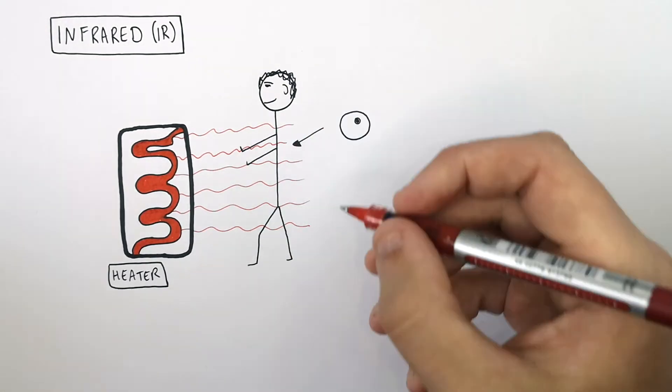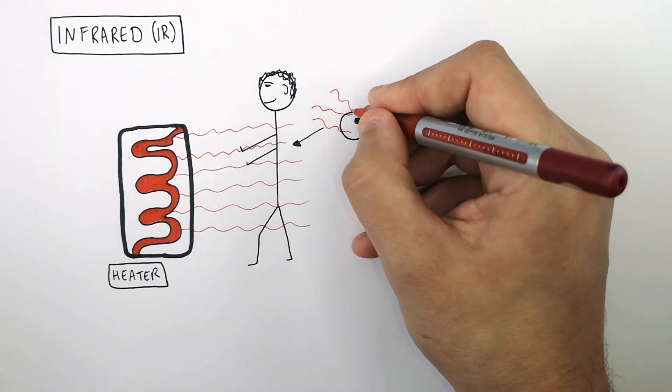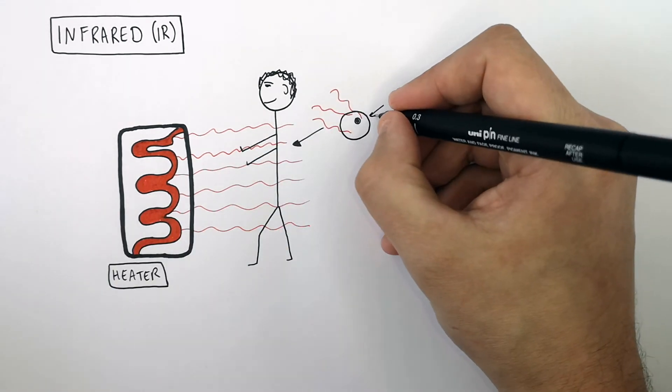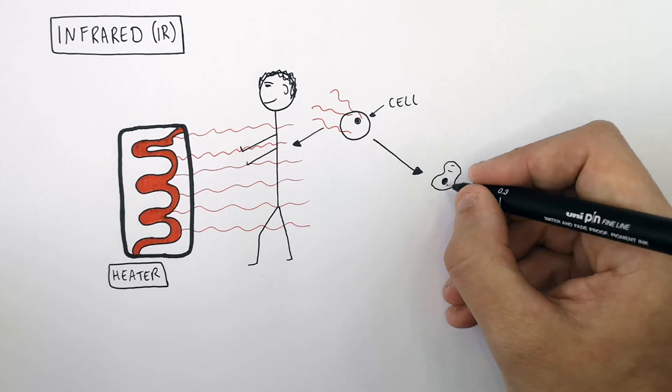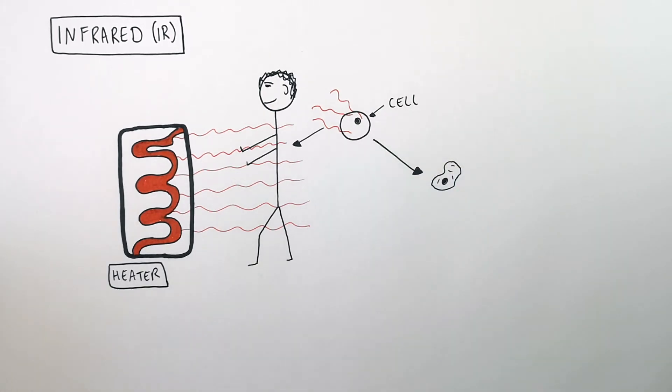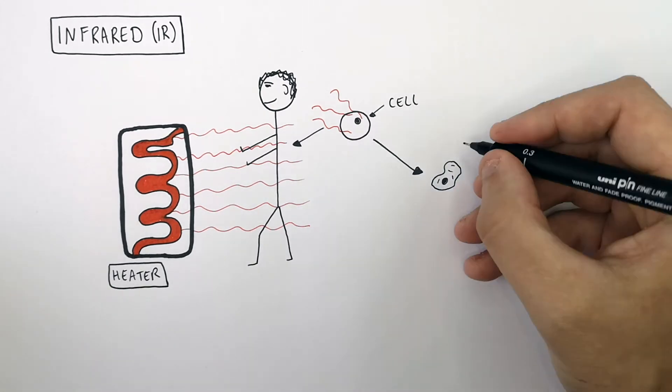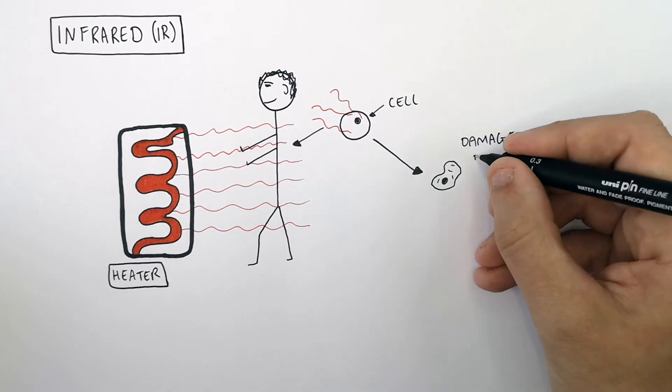However, overexposure to an infrared radiation source can damage the cells. And the cells get damaged due to heating. So if you're too close to an infrared radiation source, the damage can be done to your cells due to heating.